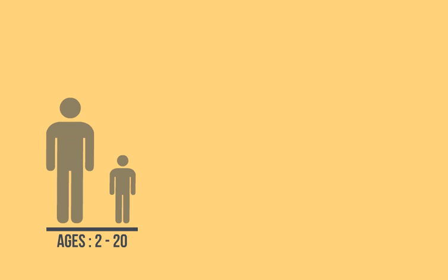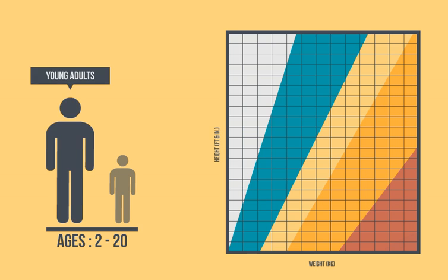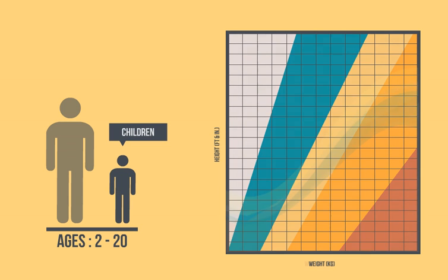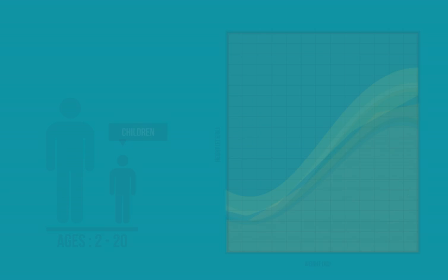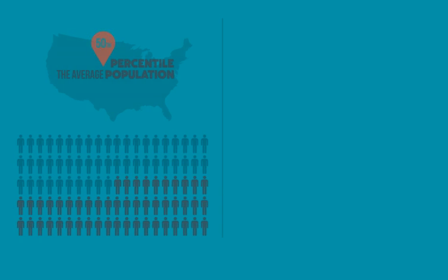Then what does BMI for age mean? BMI for children and young adults ages 2 to 20 is called BMI for age. Why? Because body fat changes as you grow. So BMI for age is tracked on separate growth charts to determine a percentile. A BMI percentile indicates how your measurements compare to others of the same age and gender.